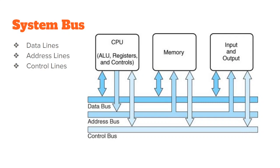There are mainly three types of buses: data bus, address bus, and control bus — also called data lines, address lines, and control lines. The main parts of a computer are CPU, memory, input, and output, and information is transmitted among these through these three buses. The data bus transfers data from the input/output device to memory or to the CPU, and back to the output device for the user.